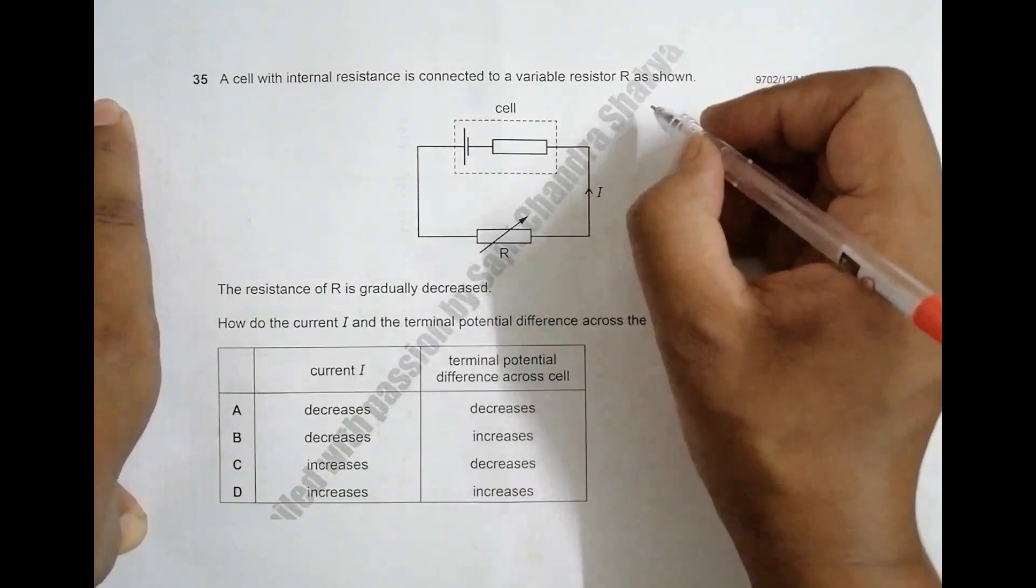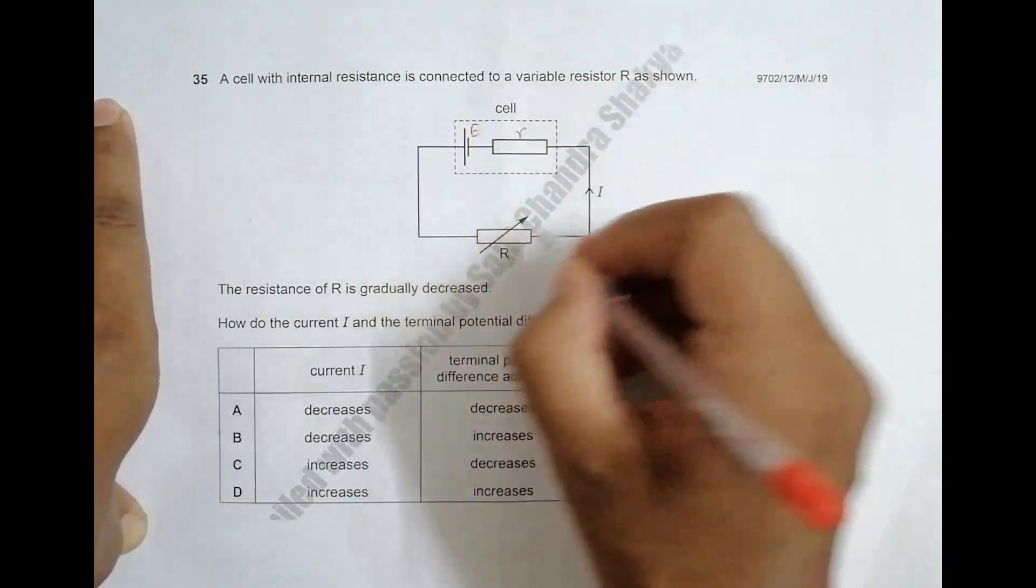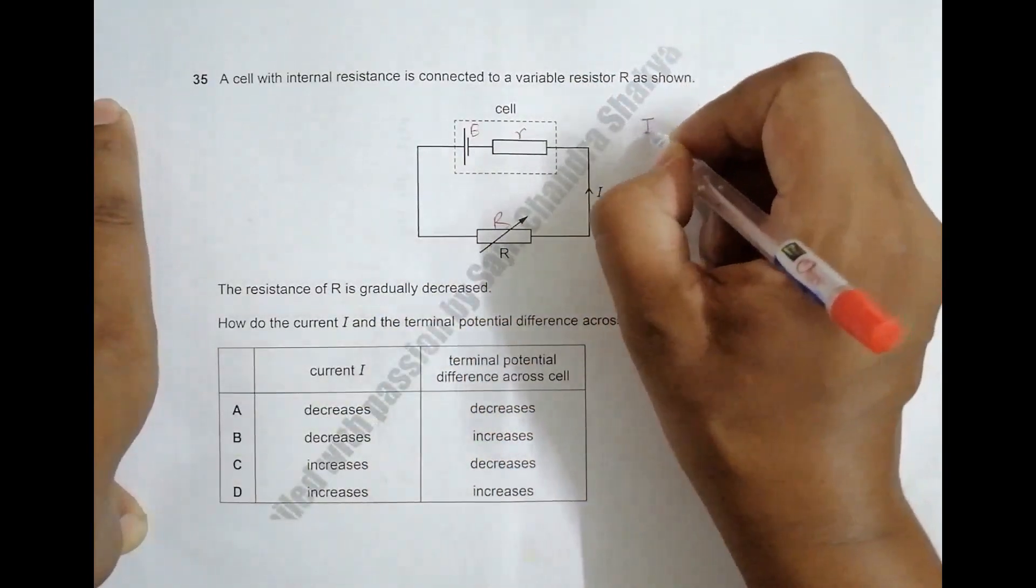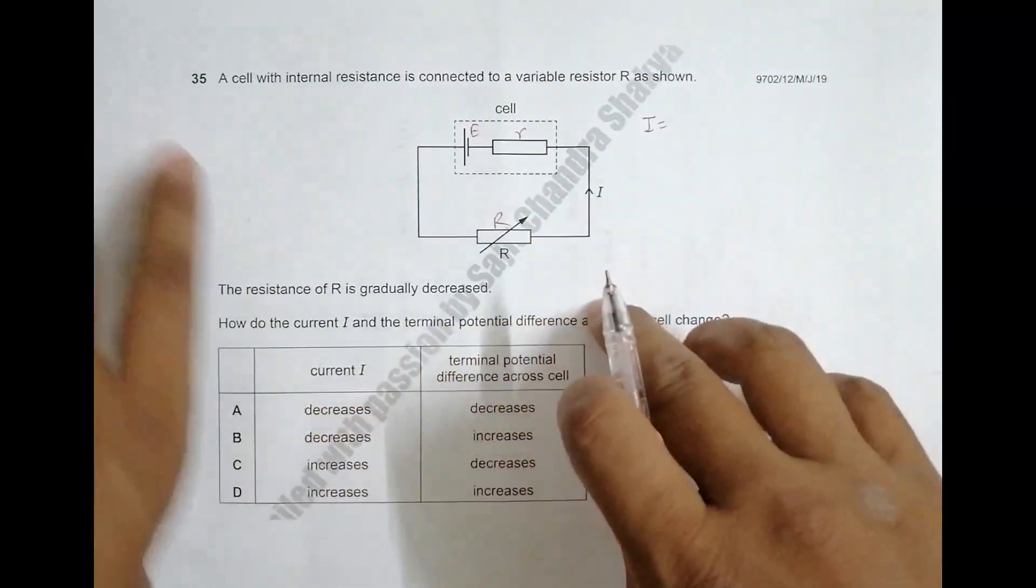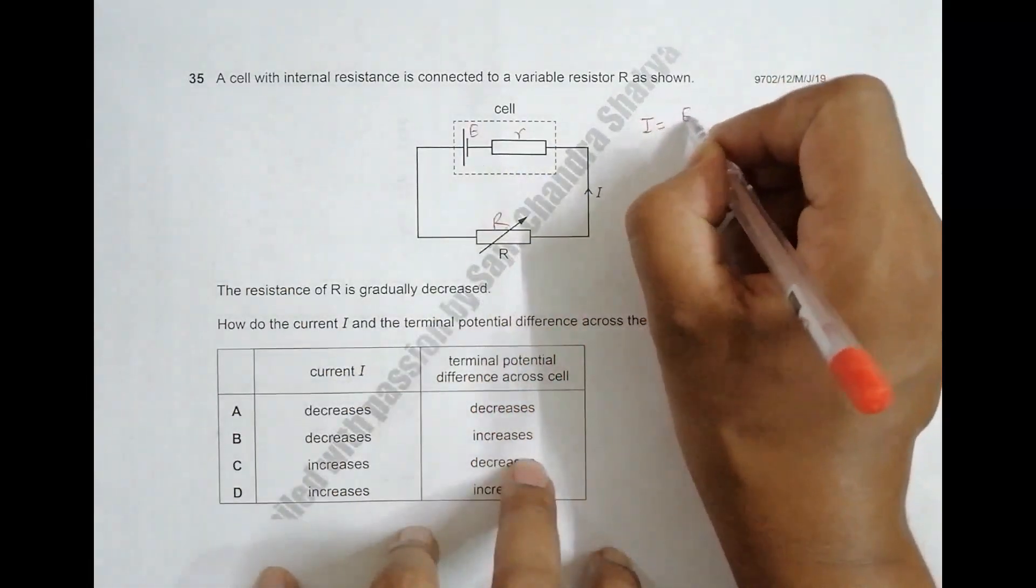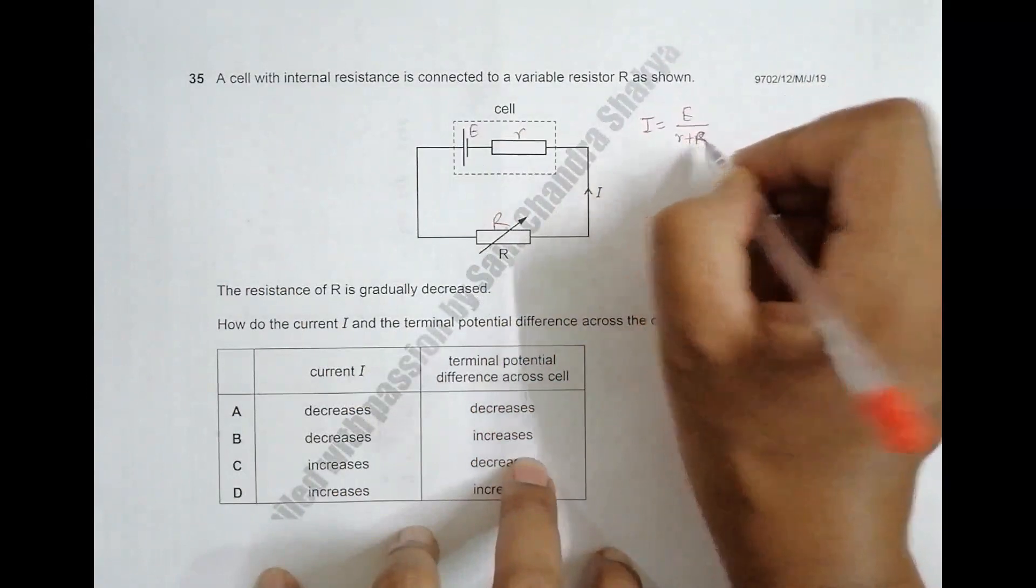We have to see the variation of two things: one is current I and the other is terminal PD. This is small R for internal resistance and this is R. So I is equal to, first we have to find what happens to current. I is equal to E divided by the total resistance in the circuit, that is R plus r.